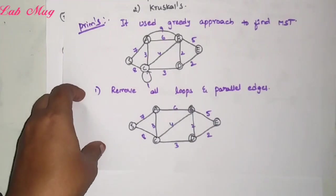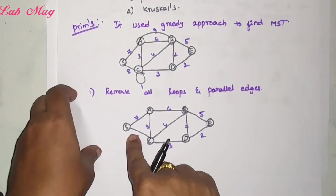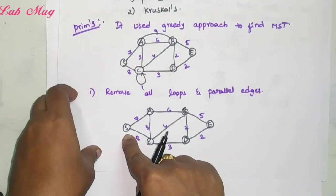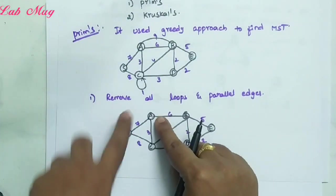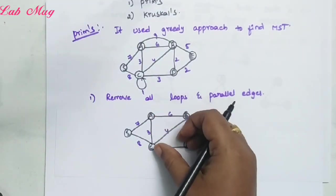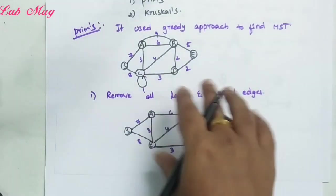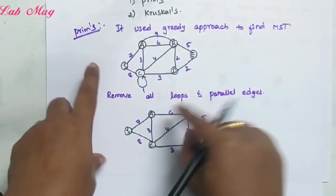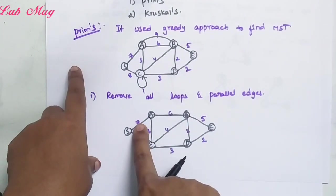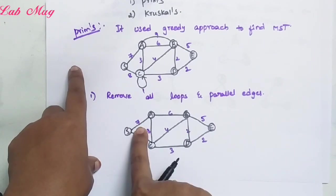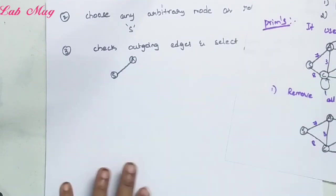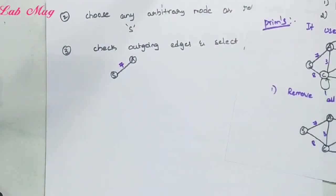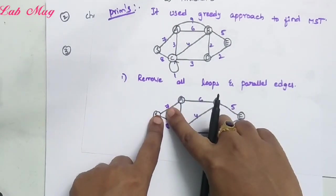Now let's actually look at the graph. Starting from S, there are edges going out. From S, edges go to A and to C — two edges. Among these two edges, the minimum cost: the weights are 7 and 8. The minimum weight is 7. So first I am taking the edge S to A. This edge, S–A, is the first minimum edge with weight 7. That is our first connection in the graph.